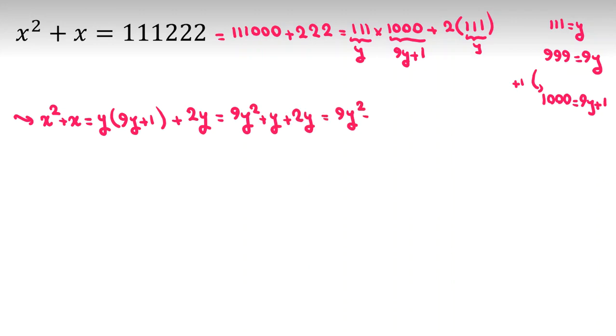Which is 9y squared plus 3y. So here you can easily see that 3y, 3y plus 1, and you say okay, this one if you factorize it will be x times x plus 1.